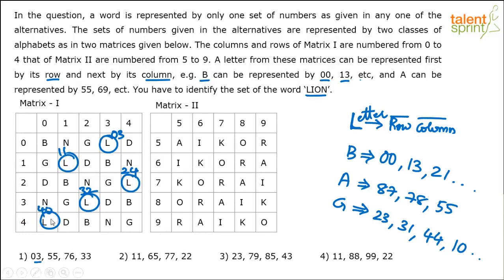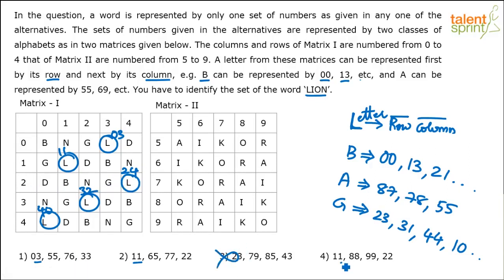So 03 is possible — it's there. 11 is also possible — it's there. But 23 is not possible for L; 23 is G. So that option is eliminated. 11 is of course possible, so three options are remaining and one is eliminated.